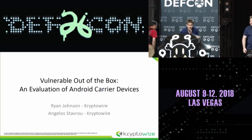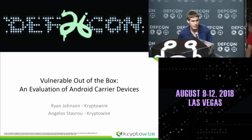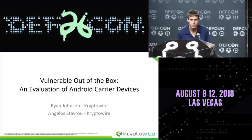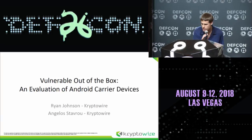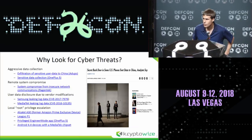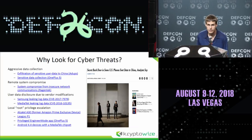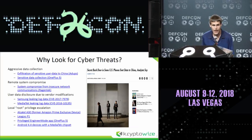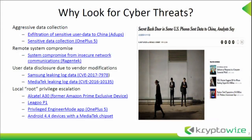First I'd like to thank everyone for coming. My name is Ryan Johnson. I'm from Cryptowire and I collaborated with Angelo Stavro for this research. So why are we doing what we're doing? The short answer is to be proactive, look for vulnerabilities, and responsibly disclose them to minimize any impact to the end user.